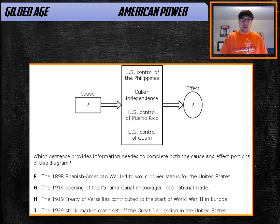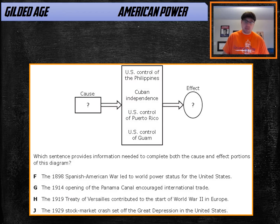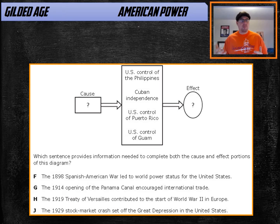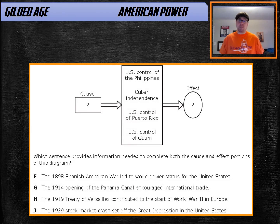When you look at a question like 'which sentence provides information needed to complete both the cause and effect portions of this diagram,' the information given includes: US gains control of the Philippines, Cuban independence, US controls Puerto Rico, US controls Guam. Everything you see is the US gaining control of some faraway land. The Spanish-American War is the cause; the effect is we become a world power. The answer is F. This is your typical Spanish-American War slash American power question on this test.